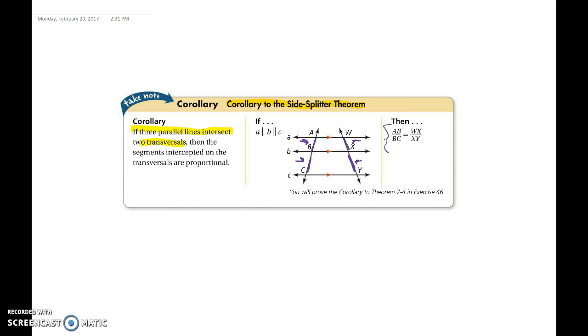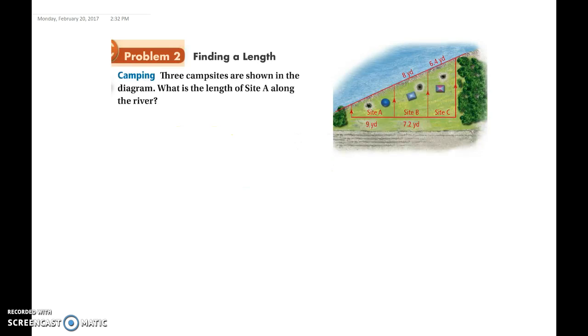And now this video is really quick because all we're going to do now is this one problem, and we're done. So three campsites are shown in a diagram. What is the length of site A along the river? So they tell us that these lines are parallel, and that means these two lines here, I'll highlight in blue, must be our transversals that they are intersecting.